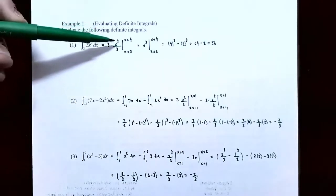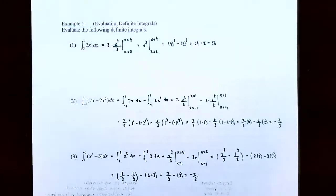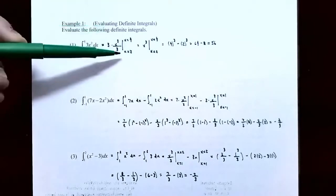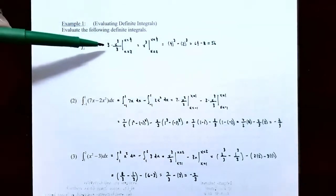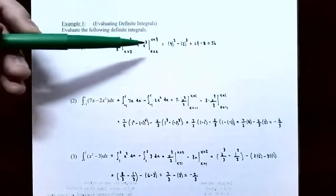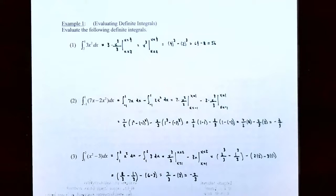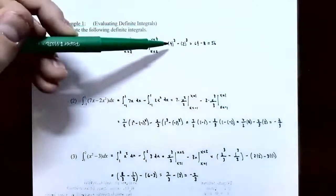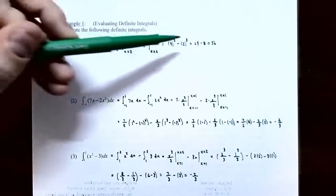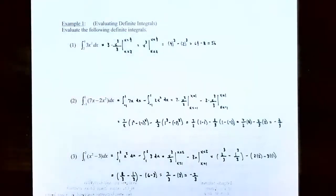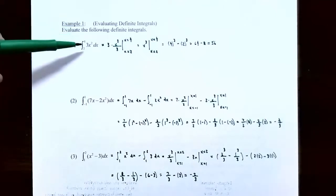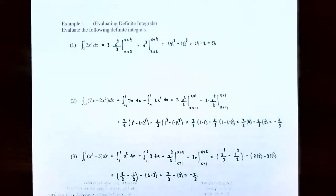The threes cancel out, leaving x cubed, evaluated at x equals four and x equals two. Plug in the upper limit of integration first: four cubed. Then subtract the lower limit: two cubed. So we have four cubed minus two cubed, which is 64 minus 8, or 56. That means the area under the curve y equals 3x squared from x equals two to x equals four, above the x-axis, is 56.